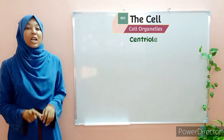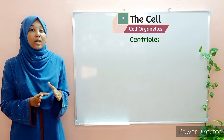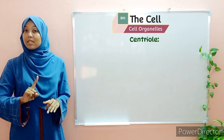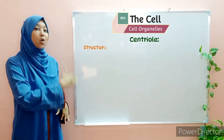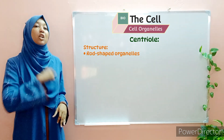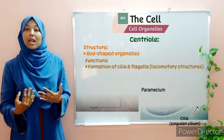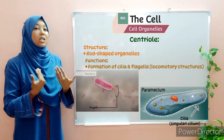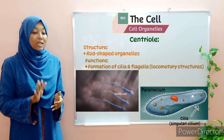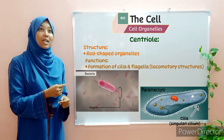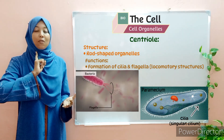The first organelle is the centriole. Did you know that if it were not for the centriole, bacteria and many other microorganisms would not be capable of movement? That is actually true, because centrioles, which are rod-shaped organelles, are responsible for the formation of cilia and flagella. Cilia and flagella are locomotory structures responsible for movement in microorganisms and in a few cells.